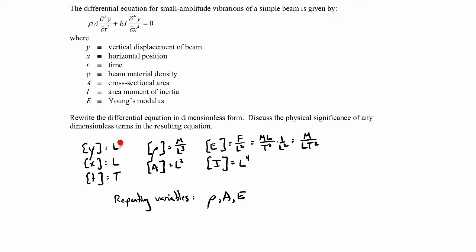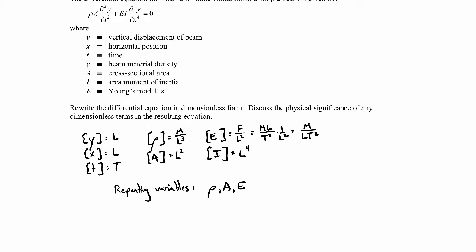The reason I want to choose those three is because if you look through this set of variables, you'll see that we certainly need a length by itself, we'll need a time, and we'll need a mass. The area, moment of inertia, and elastic modulus all have those quantities, so with three reference dimensions I'll need three repeating variables.